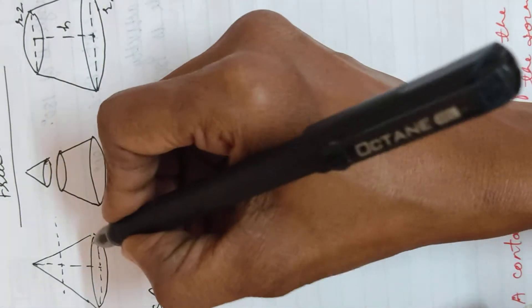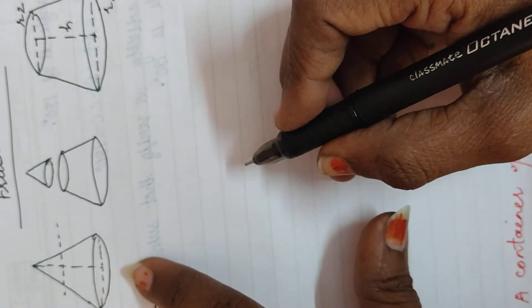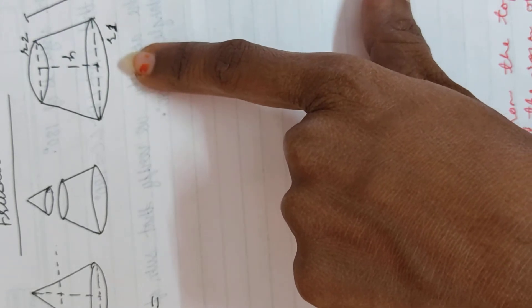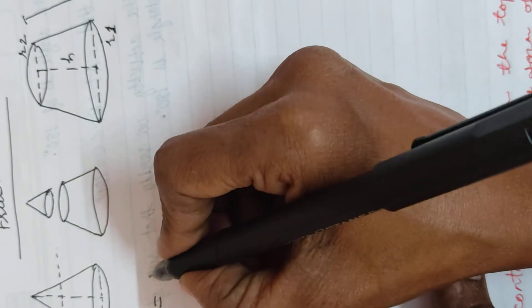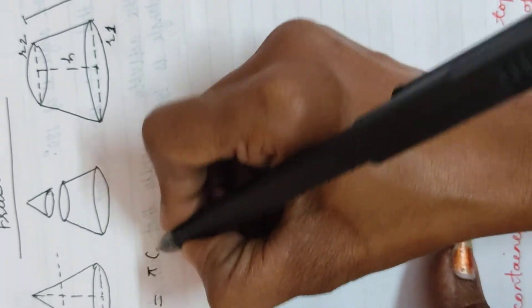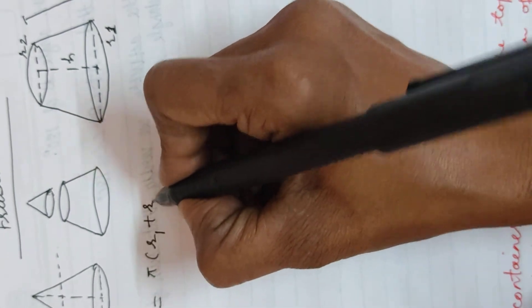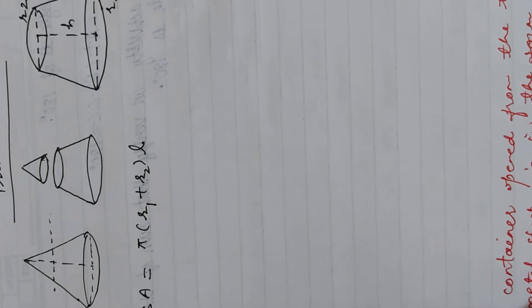In a cone we have only one radius, but in this frustum we get two radii. So the formula for curved surface area of frustum of a cone is π(R1 + R2) × L. This is the curved surface area of frustum of cone.